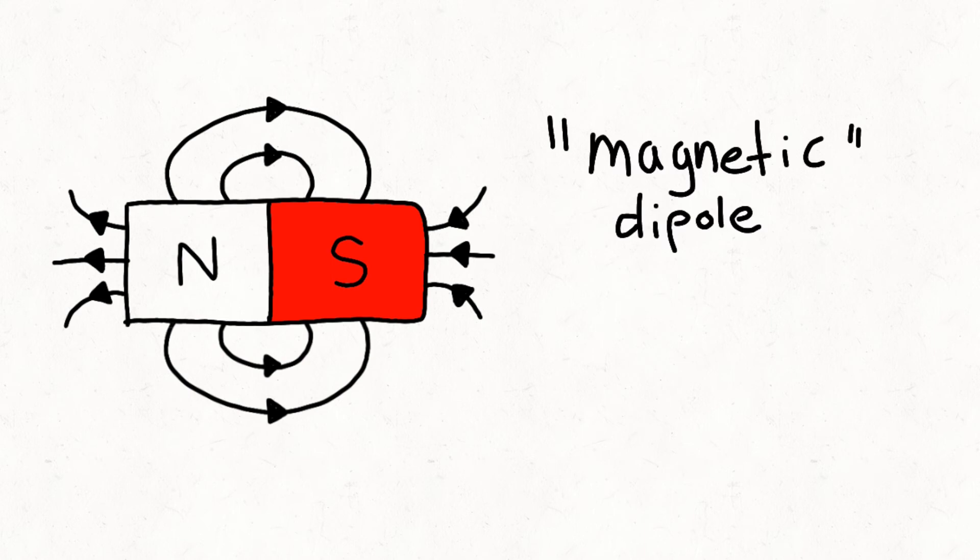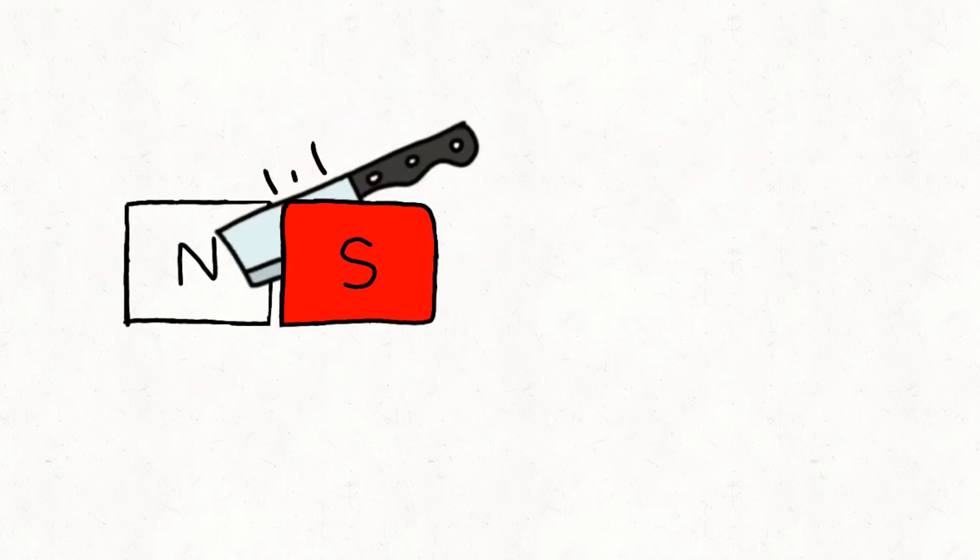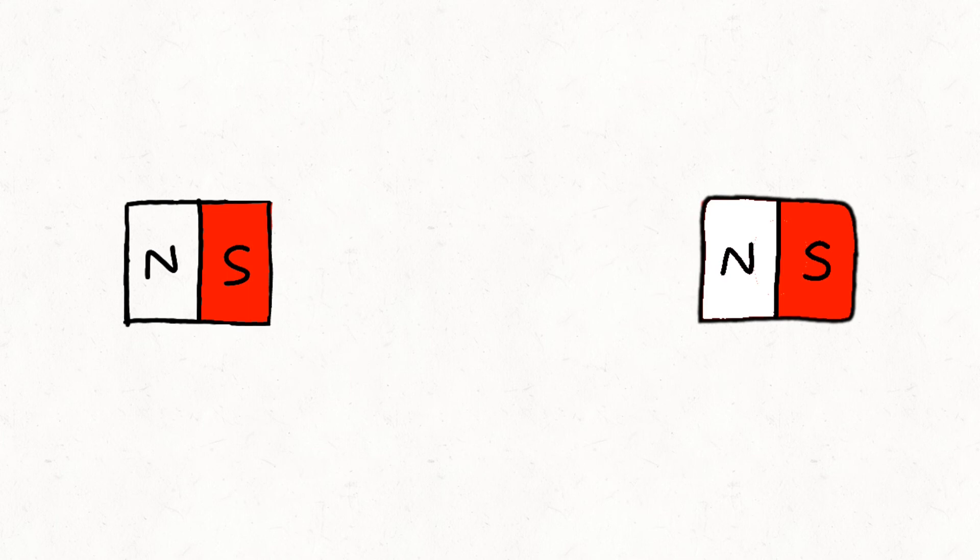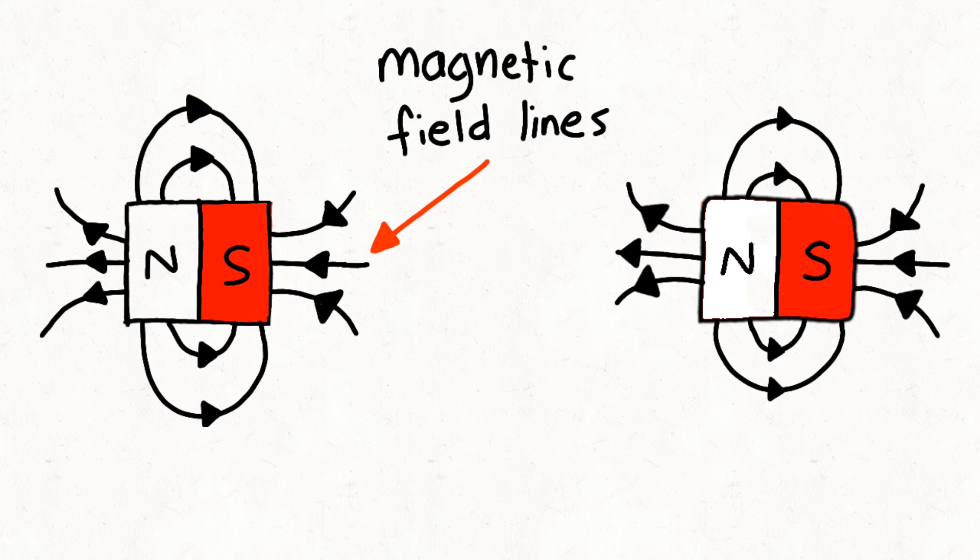If you cut the magnet in half, the two halves now have their own magnetic north and magnetic south. Invisible magnetic field lines surround the north and south poles in a closed loop. These lines never cross each other, and the closer they get together, the stronger the magnetic field becomes.